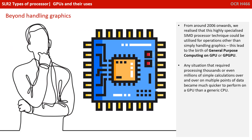From around 2006 onwards, we started to realise that this highly specialised SIMD processor technique could be utilised for operations other than simply handling graphics. This led to the birth of what some people call general purpose computing on GPU, or GPGPU. Basically, any situation that required processing thousands or even millions of simple calculations over and over on multiple data points became much quicker to carry out on a GPU than a generic CPU.